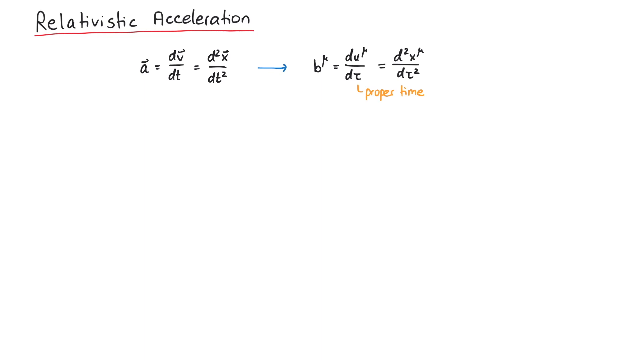Before we actually calculate b mu, let's first look at an interesting connection between 4-velocity and 4-acceleration. Since the square of any 4-velocity is always equal to c squared, the derivative with respect to proper time tau will be zero.